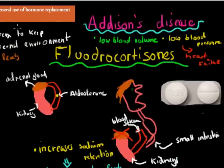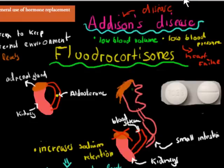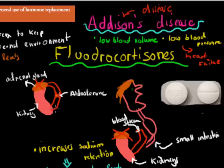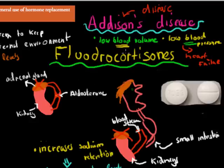This therapy is generally used for people who can't secrete aldosterone. There's actually a disease called Addison's disease. For people with Addison's disease, their adrenal gland doesn't work properly and doesn't produce the hormone aldosterone. So with no aldosterone, there's no effect of increasing blood volume and blood pressure. People with Addison's disease often have low blood volume and low blood pressure — those are symptoms — and that can lead to heart failure.